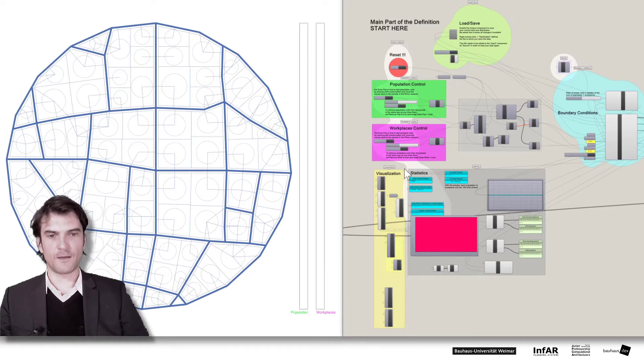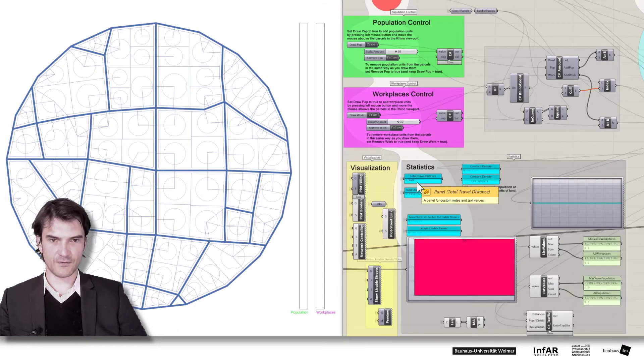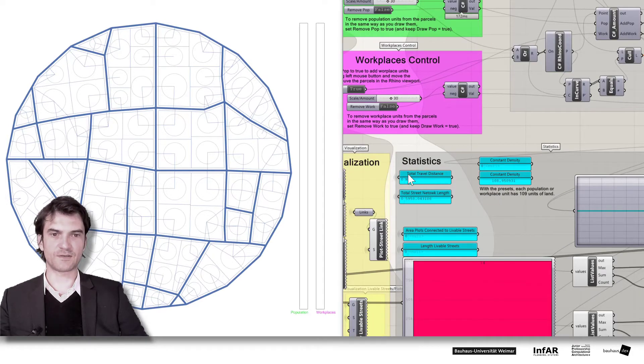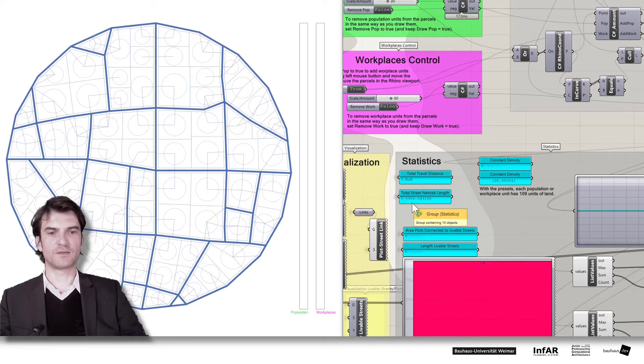And finally this box here contains the statistics. So let me scroll in here. Here the total travel distance. That's the number that you should minimize. The total network length is constant because we don't change anything in the network. But later for your design exercise this number is of course relevant because these are costs that you generate by adding streets. Somebody have to build them. Somebody have to maintain them. This costs money. And this number usually need to minimize.